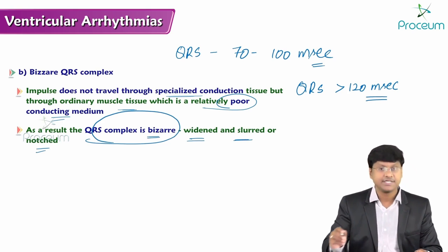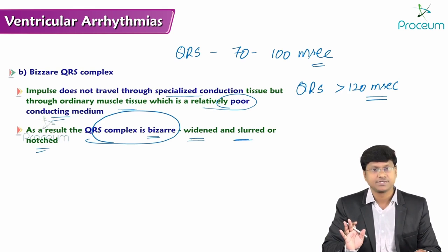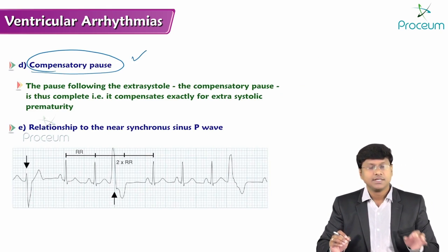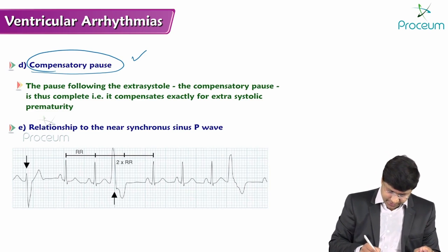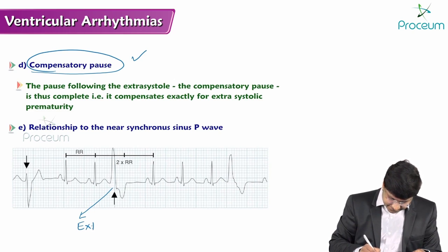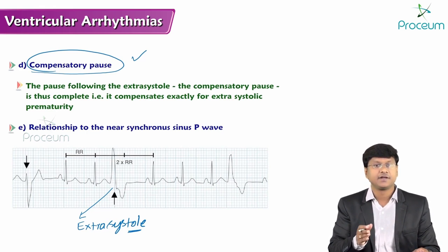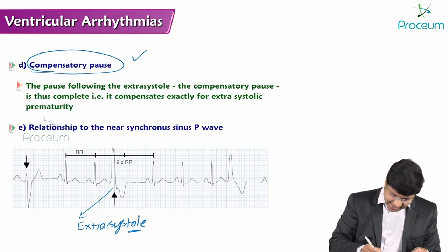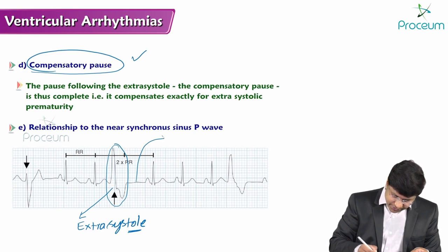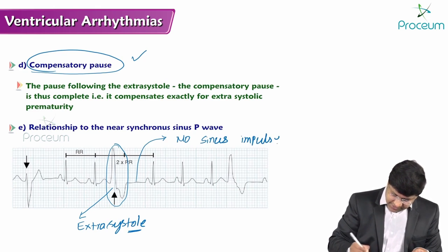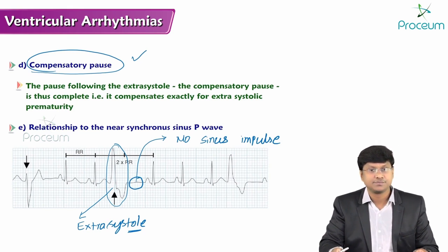Another important feature is the compensatory pause. The pause following the extra systole is complete — it compensates exactly for the extra systolic prematurity. After the premature ventricular contraction, there is no sinus impulse for a period of time, which is the compensatory pause.